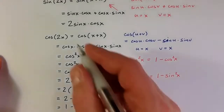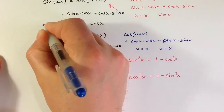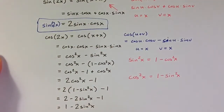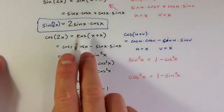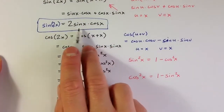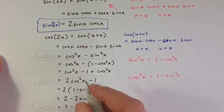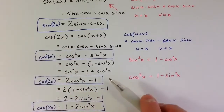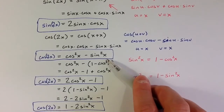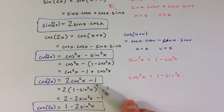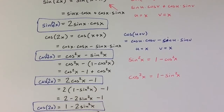So we have our double angle identities. Sine of 2x is 2 times sine of x times cosine of x. Cosine of 2x can be written in three ways: as cosine squared x minus sine squared x, as 2 times cosine squared x minus 1, and as 1 minus 2 sine squared x.